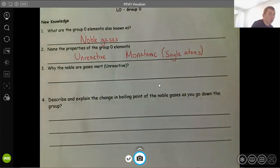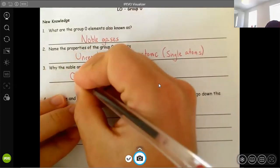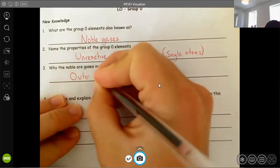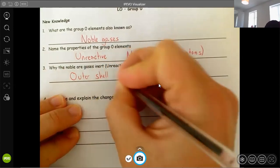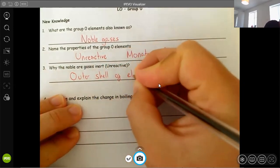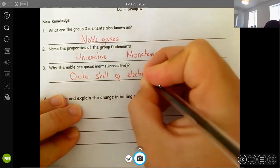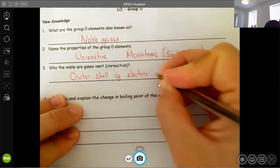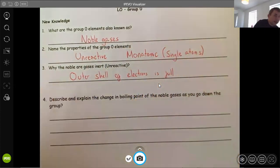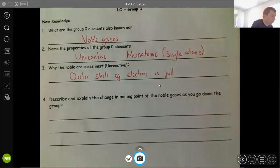So the question is, why are the noble gases inert or unreactive? It's because the outer shell is full. Outer shell of electrons is full. That means they don't react. They don't need to. What's the point? They're full. They're happy. They're sound. Therefore, they do nothing. They just sit on their own. They are boring and unreactive.